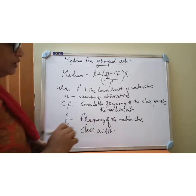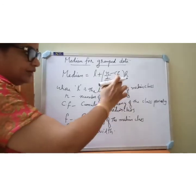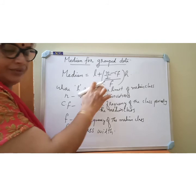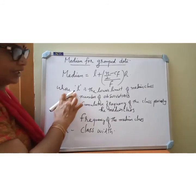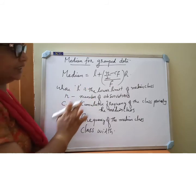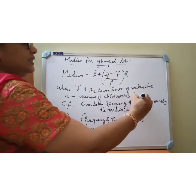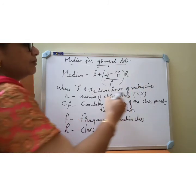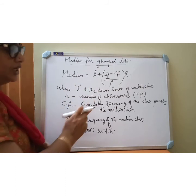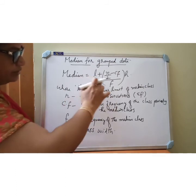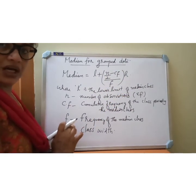So, median equals L plus N by 2 minus CF, whole divided by F, into H, where L is the lower limit of the median class. N represents sigma F, the sum of frequencies. CF is the cumulative frequency of the class preceding the median class. F is the frequency of the median class, and H is the class size or class width.